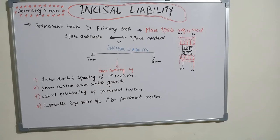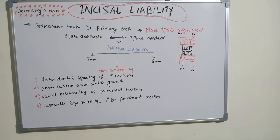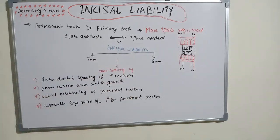The second mechanism is intercanine arch width growth. As the permanent incisors erupt, the arch expands in the canine-to-canine region. Because the permanent incisors are larger, the arch itself widens to help accommodate them in their final position.